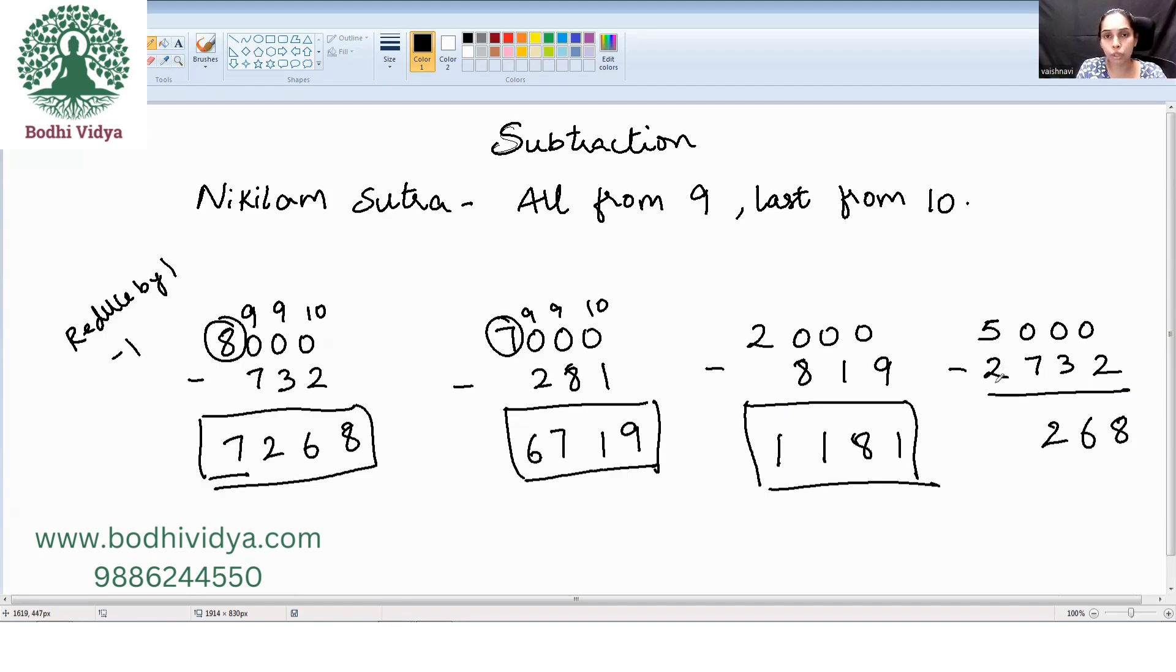Sorry. 5 minus 2 is how much? 3. Now reduce this 3 by 1 and that is 2. So the answer is 2, 2, 6, 8.